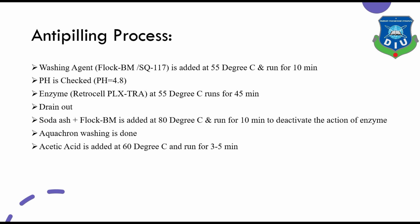Anti-pilling process or enzyme wash: first, add washing agent at 55 degrees centigrade and run for 10 minutes, then check the pH. If it is 4.8, proceed to enzyme wash. Run with enzyme Retrocell PLX TRA at 55 degrees centigrade for 45 minutes. Then drain the water and add soda ash plus Floc BM at 80 degrees centigrade, run for 10 minutes to deactivate the enzyme. Then washing is done, and acetic acid is added at 60 degrees centigrade and run for 3 to 5 minutes.